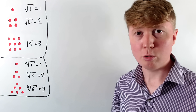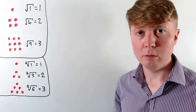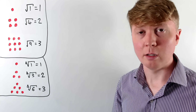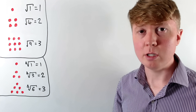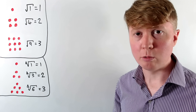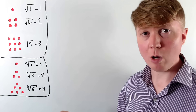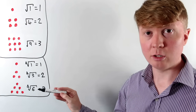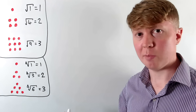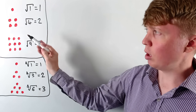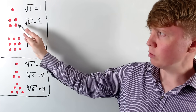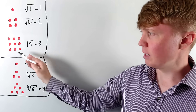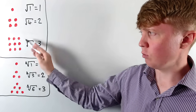So we all learn in school what square roots are, but what are triangular roots? If we go back to a basic understanding of what a square root is: if you arrange some dots into a square pattern, the square root of the total number of dots is just telling you how wide or how tall the picture is. So the square root of 1 is 1, the square root of 4 is 2, because this is a 2 by 2 drawing, and the square root of 9 is 3, because this is 3 by 3.